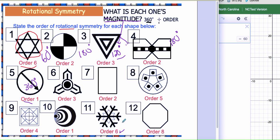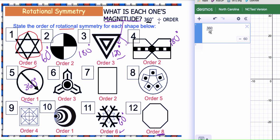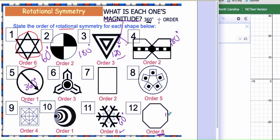What about eight? Order of eight - you take 360 and divide it by eight, so this one is actually 45 degrees. Magnitude is degrees.